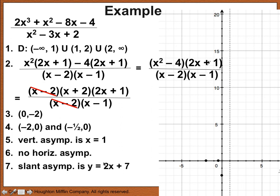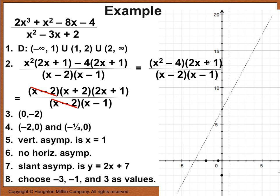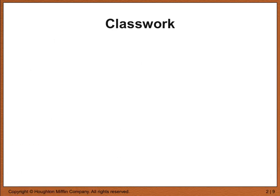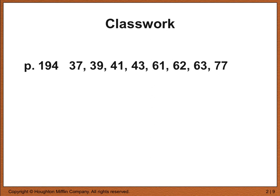We draw the slant asymptote, then plot points at x equals negative 3, negative 1, and 3. Connecting the dots gives two smooth curve portions. There's an empty ball at x equals 2, because x equals 2 is not in the domain found in step 1. For classwork, please complete page 194 — copy down the numbers and we'll see you in class.